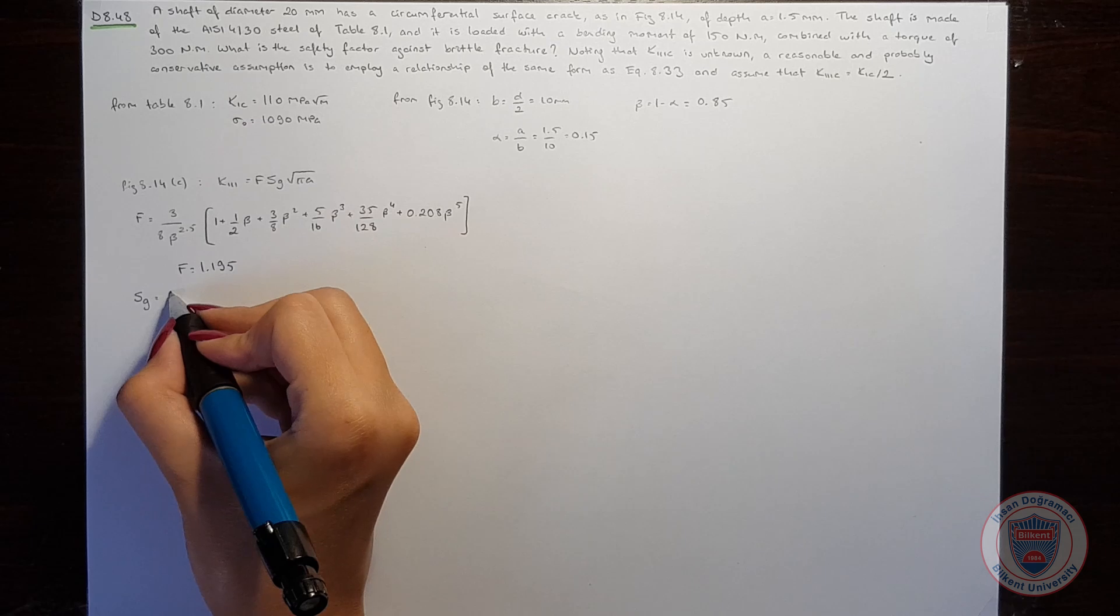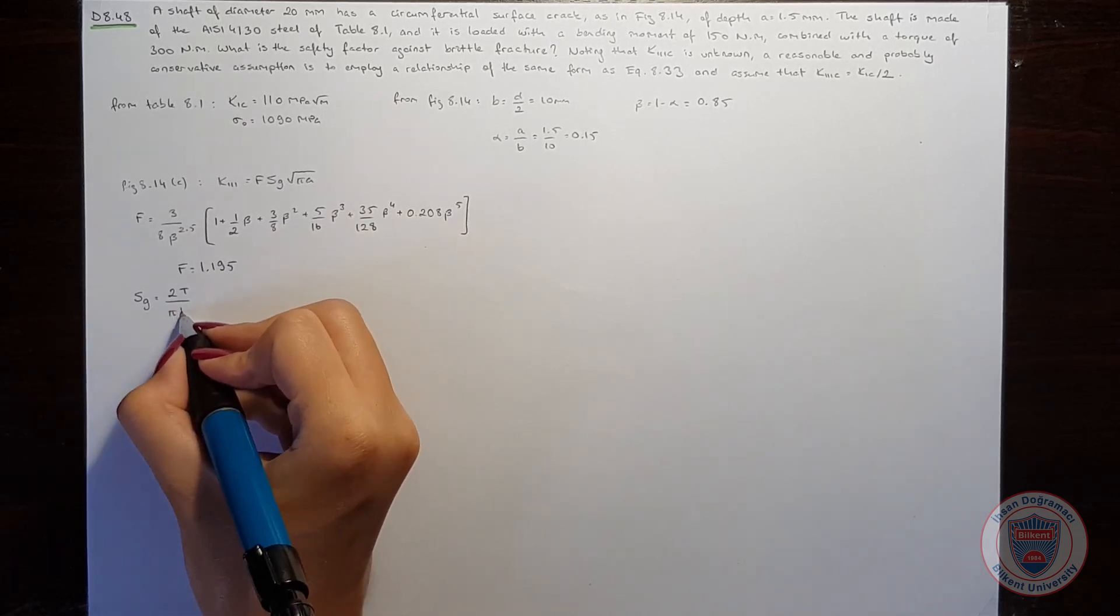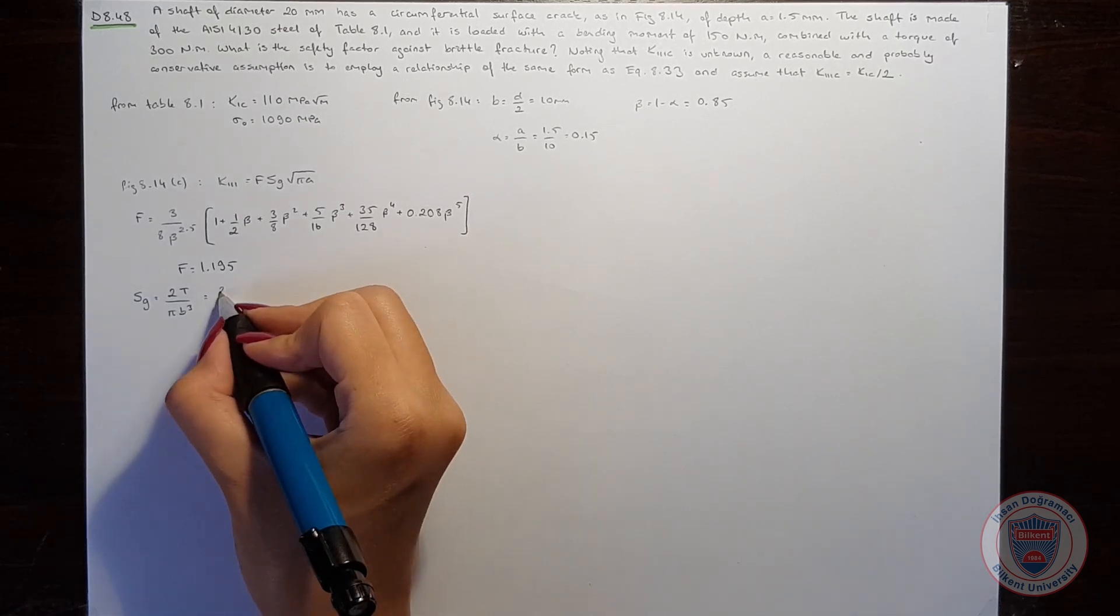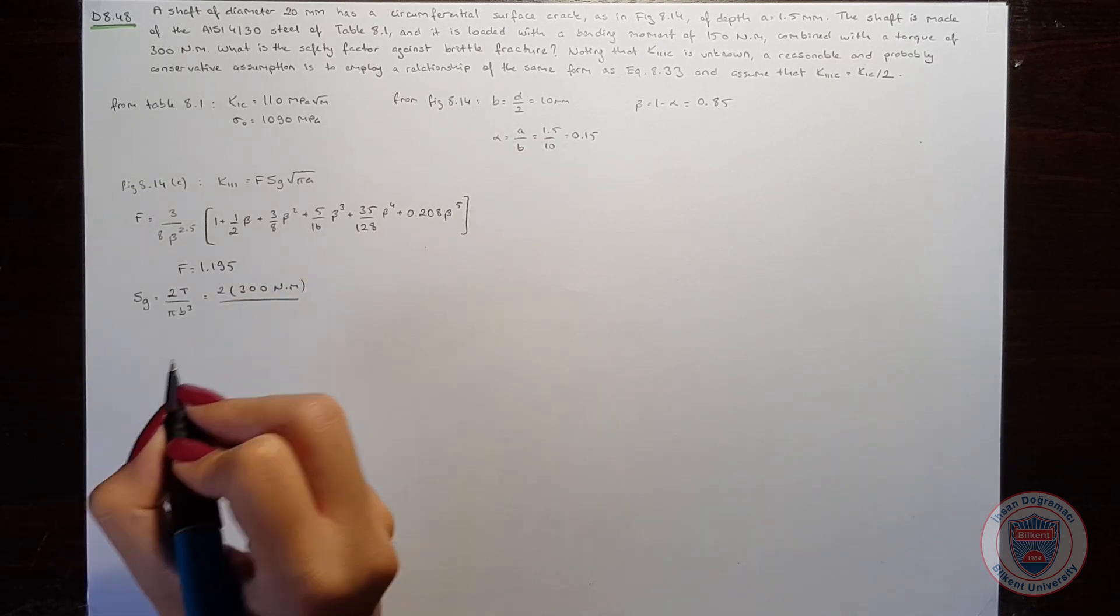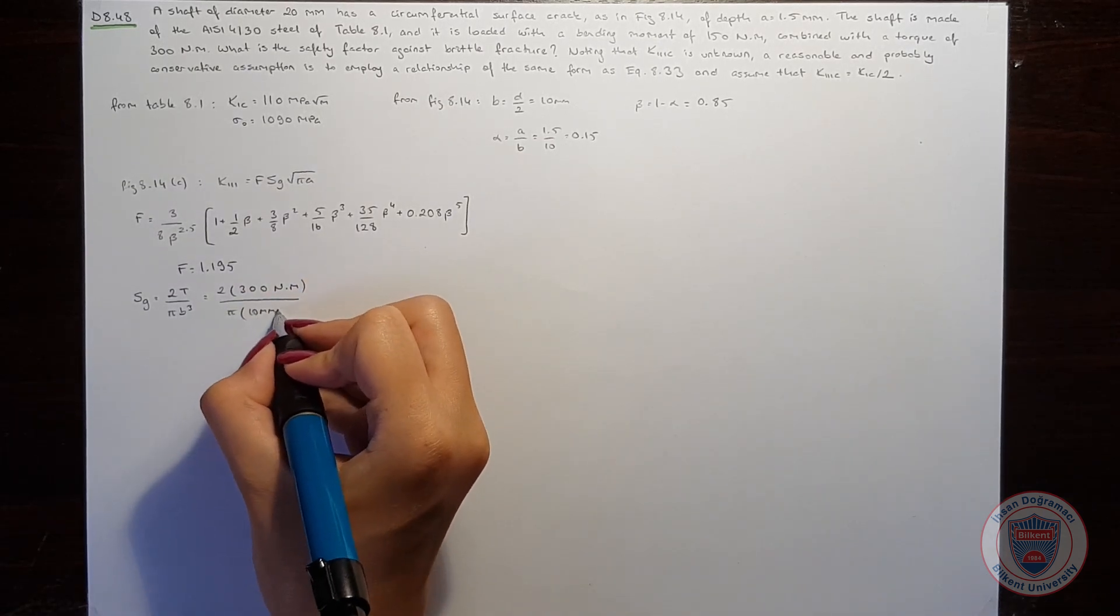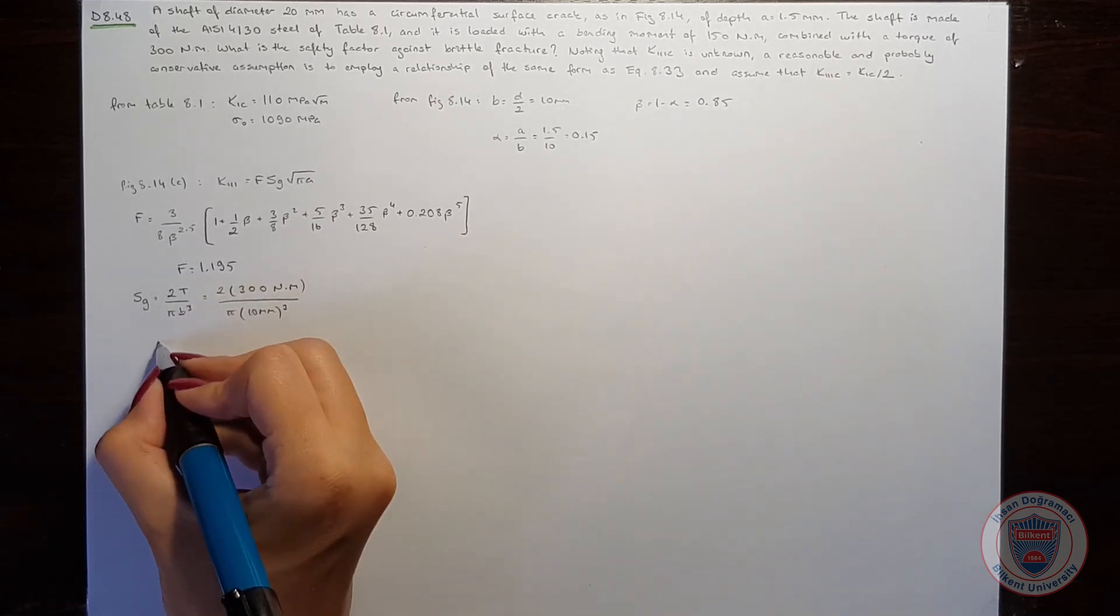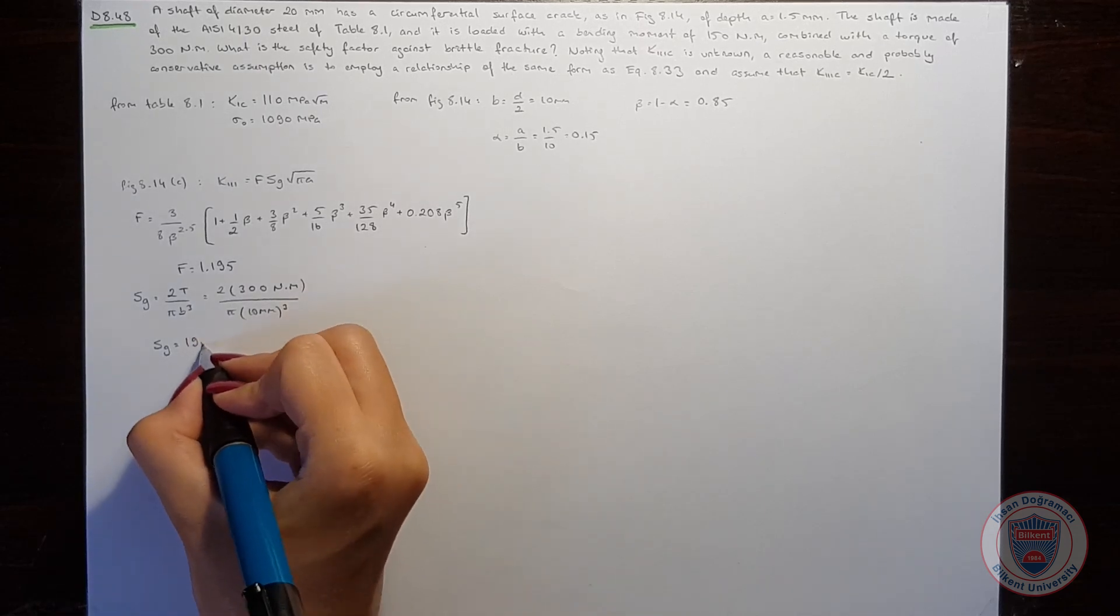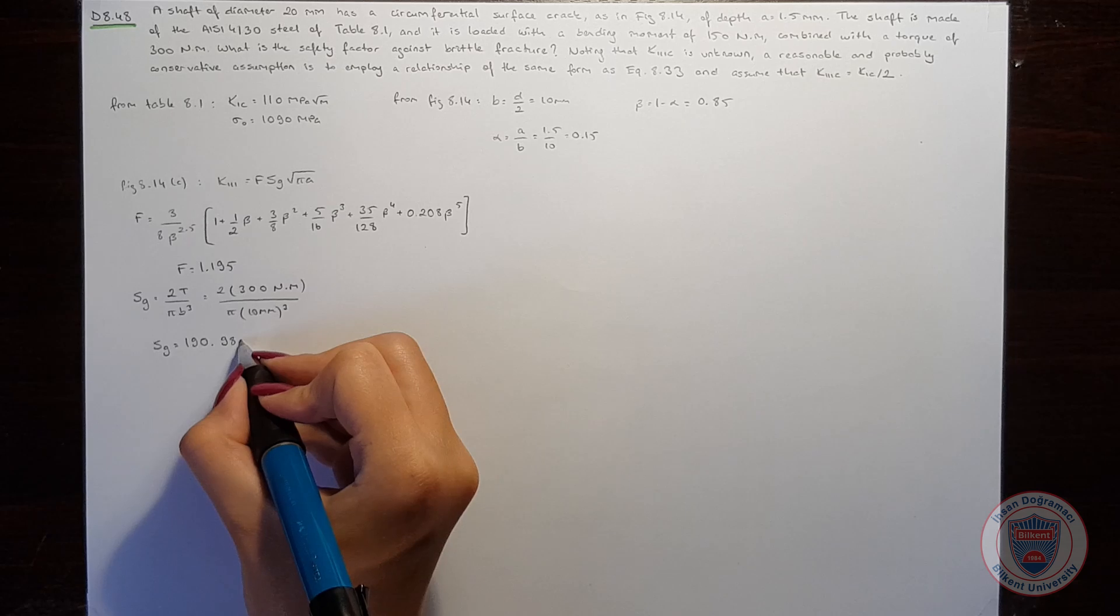Sg equals 2 times the torque over pi times B cubed. Substituting the values, we get 2 times 300 Nm over pi times 10 mm cubed, giving us Sg equals 190.98 MPa.